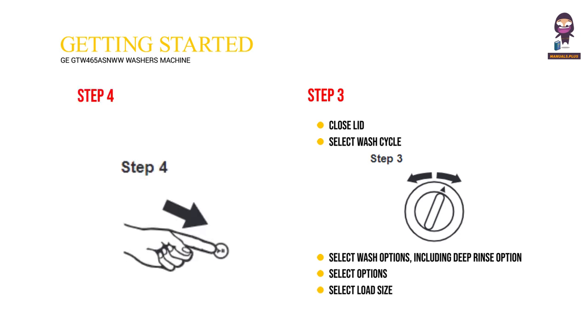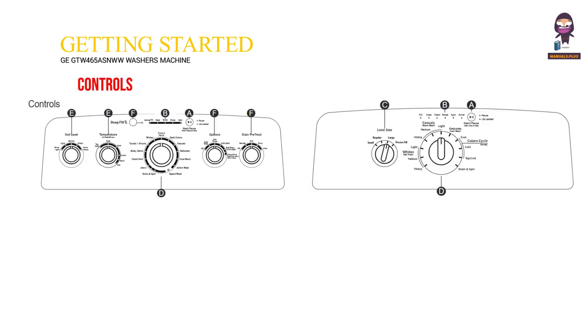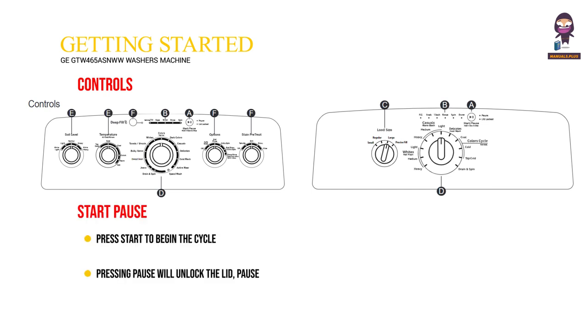Step 4: Press Start. Controls — Start/Pause: Press Start to begin the cycle. Pressing Pause will unlock the lid, pause the cycle, and the pause indicator light will blink.